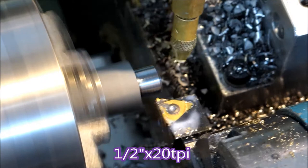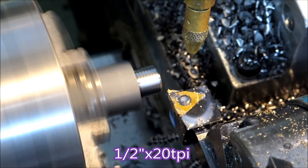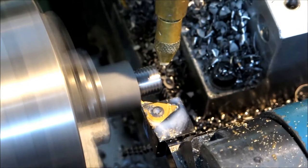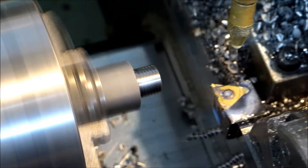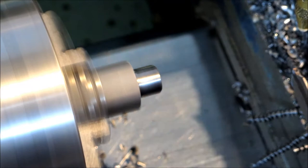This is a full profile insert, so it cuts top and bottom of the thread. No cleaning up the crest of the thread after I've finished. If you're wondering why the coolant doesn't appear to be going on the insert properly, it's because it's in the right position for the parting tool, and that's the one that really counts.